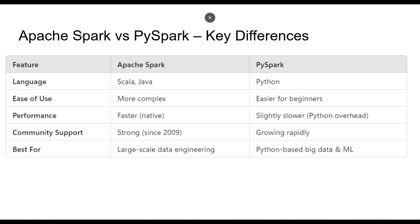For community support, Apache Spark has had strong support since its launch in 2009, and PySpark's community support is growing rapidly as Python adoption increases. Apache Spark is ideal for large-scale data engineering projects, while PySpark is best suited for Python-based big data and machine learning applications. Thank you for watching — in the next video we will create our Databricks cluster and start writing some code.